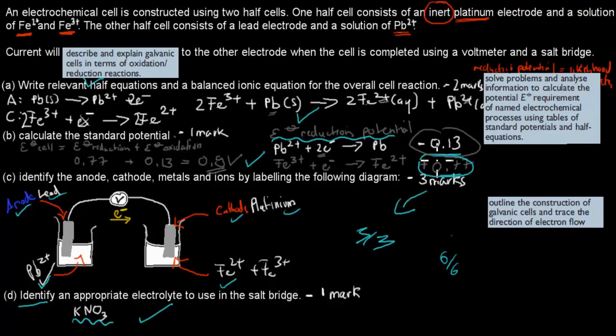And show you again where they come from. The calculation ones, and the writing in the half equations, all came from this dot point. So they calculate cell potential E using standard potential and half equations from this dot point. Identify the anode and cathode, metals, and ions, that comes from constructing the galvanic cell. So being able to construct that. And also, we also have our salt bridge coming from there as well, from that dot point. And describe and explain galvanic cells in terms of oxidation reduction. That's also related to the Part C. So the major one, the hardest part, was coming from this dot point. And the other ones, labeling parts, came from some of these ones. So I hope that was useful.